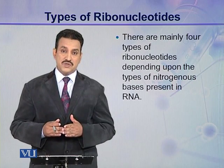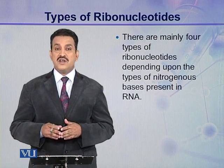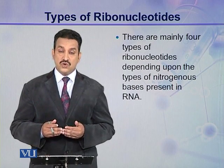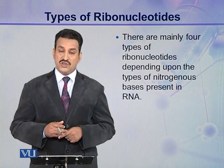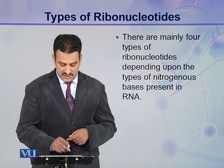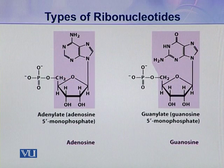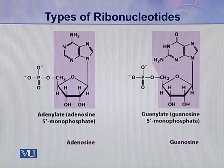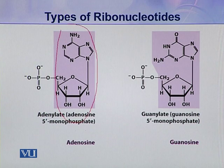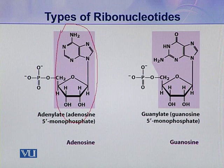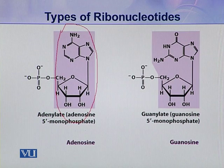One nitrogenous base is present in one ribonucleotide, but overall there are four types of ribonucleotides present in a ribonucleic acid, and these four types depend on the type of nitrogenous base. As you can see this coloured portion — this coloured portion is a nucleoside. A nucleoside is formed when a pentose sugar and a nitrogenous base combine together.